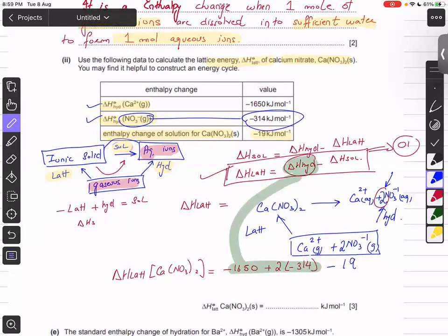The final answer for the lattice energy of calcium nitrate is −2259 kJ/mol.